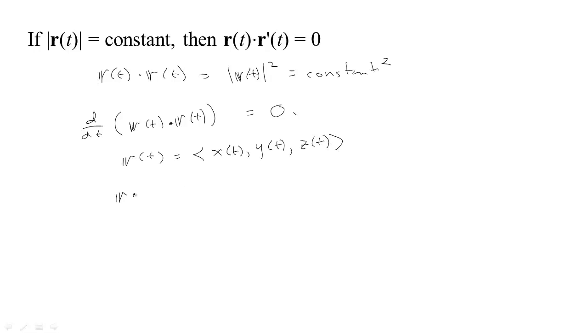And then r dot r would be x(t) squared plus y(t) squared plus z(t) squared.